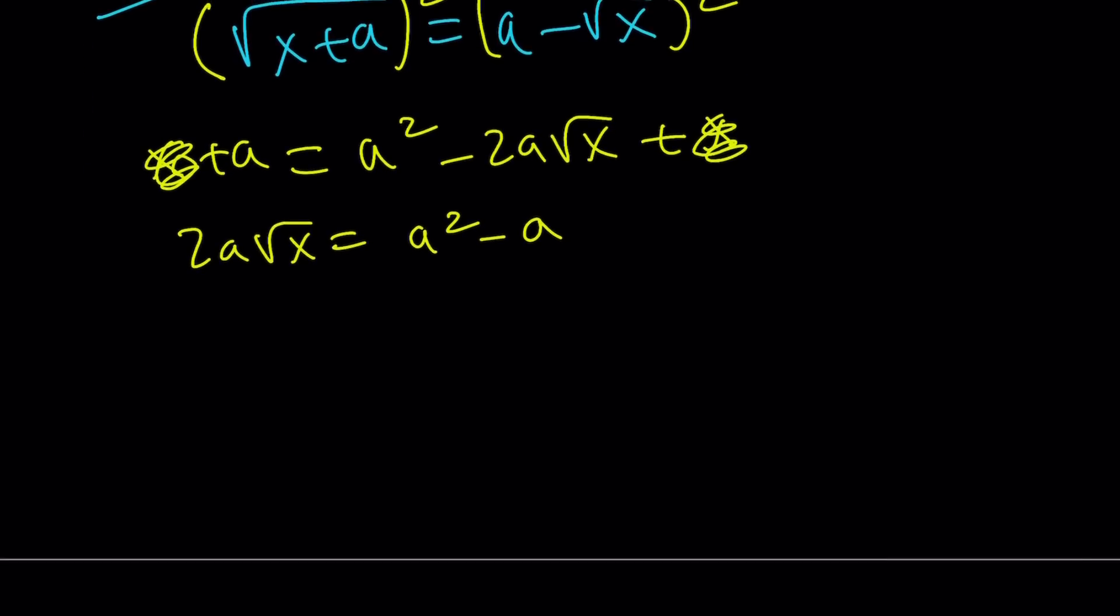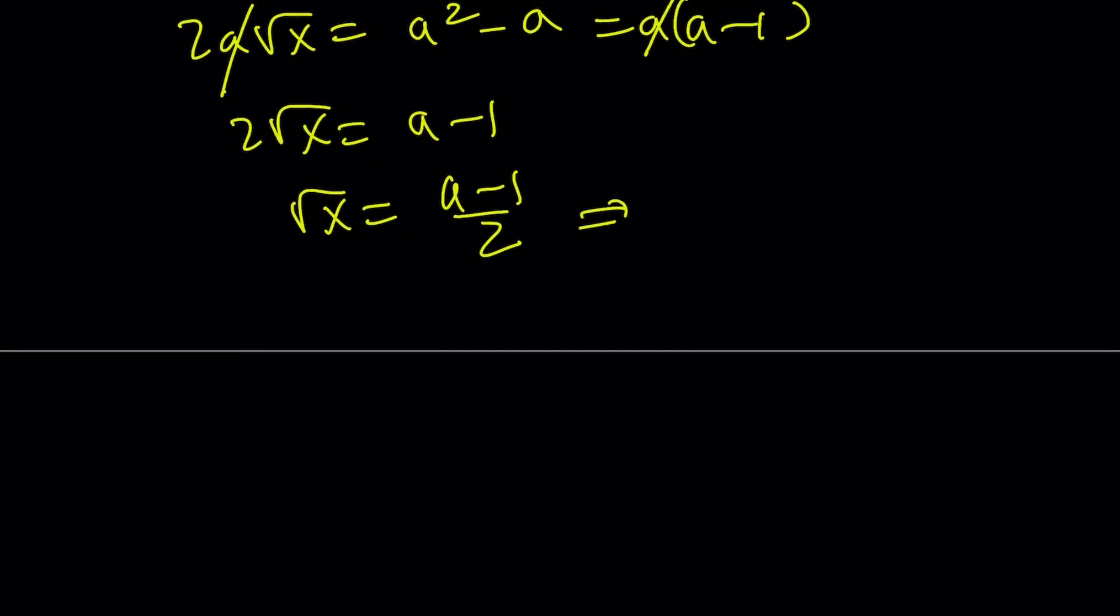2a root x equals a squared minus a. Again, simplifying the a value. Like, this is a times a minus 1. Suppose a does not equal 0. We already know in that case. 2 root x equals a minus 1. Square root of x is a minus 1 over 2. Now again, we have this value. We do need square root of x plus a. Let's go ahead and find it. From here, x becomes a minus 1 squared over 4.